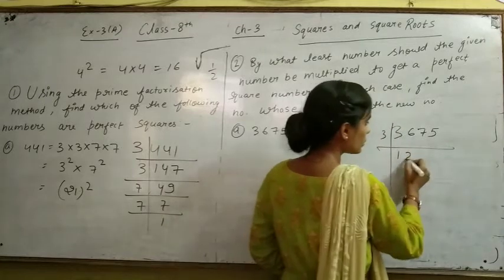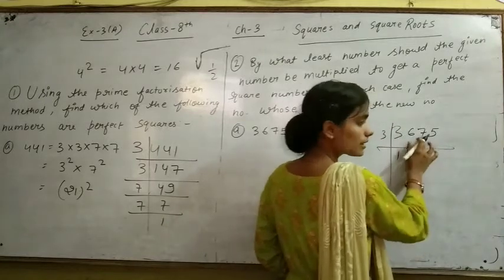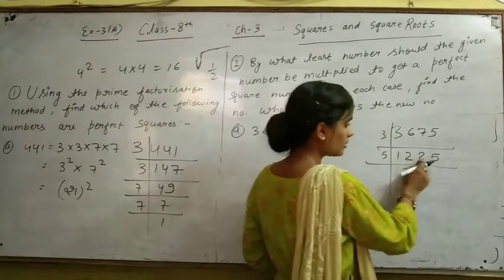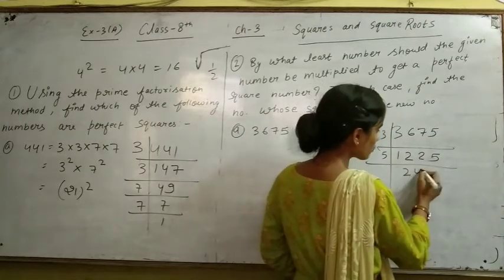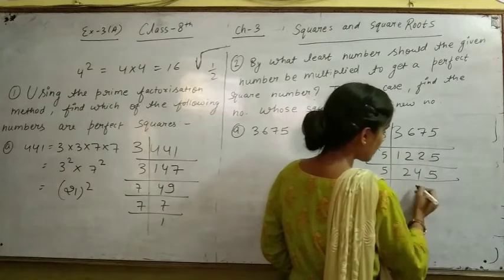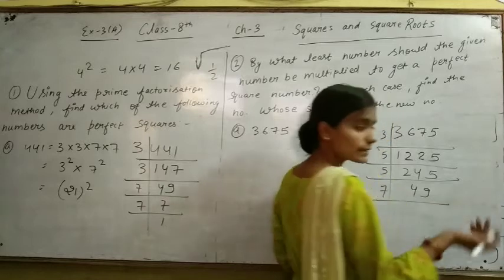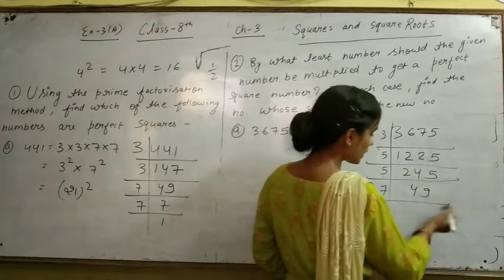We divide: 5 into 3675. 5 goes into 36 seven times. 5 into 25 goes 5 times. 5 into 20 goes 4 times, 5 into 45 goes 9 times. We have 49, which is 7 squared.